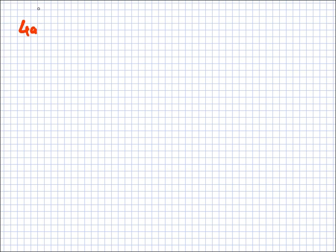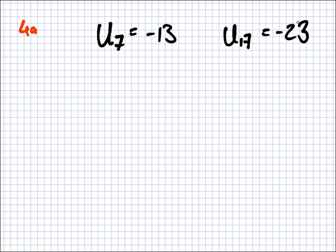Now, 4A. The 7th term is minus 13 and the 17th term is minus 23. What's the A and D? Who has an idea of what we could do first here?